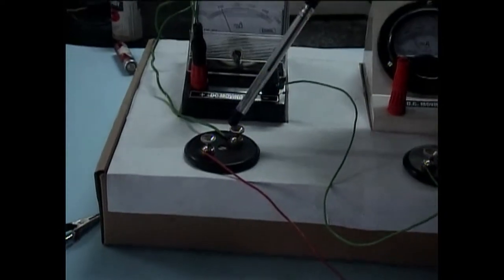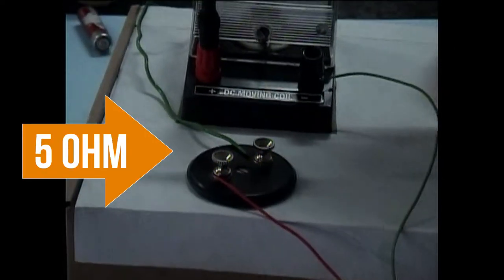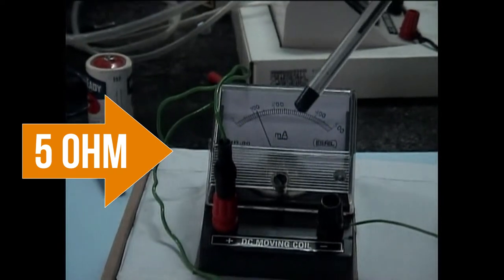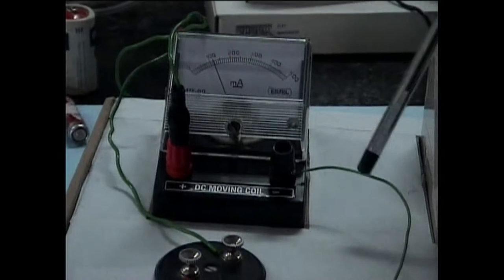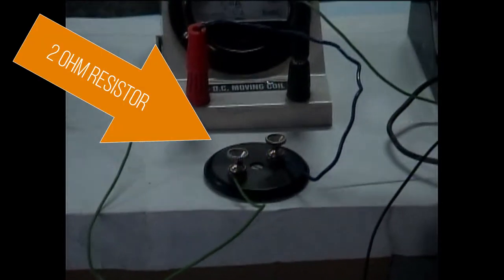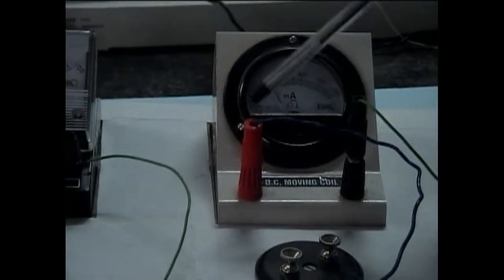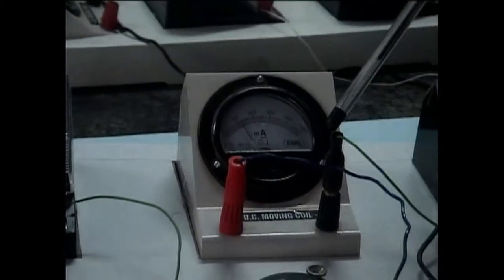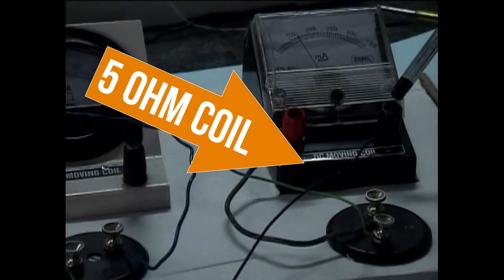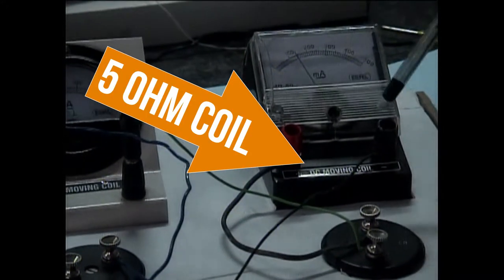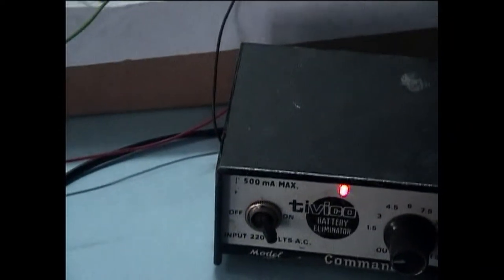I have connected the first resistor and the second end of this first resistor is connected to milliammeter positive, and milliammeter negative is connected to another resistor. Then the second end of the resistor is again connected to milliammeter positive, and milliammeter negative is connected to the third resistor. All three are connected in series with the help of a battery eliminator.